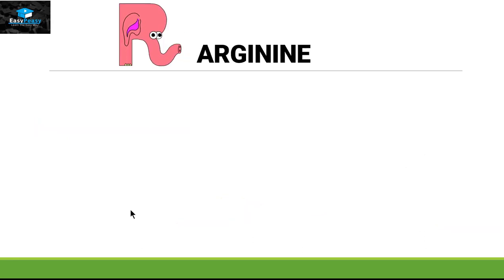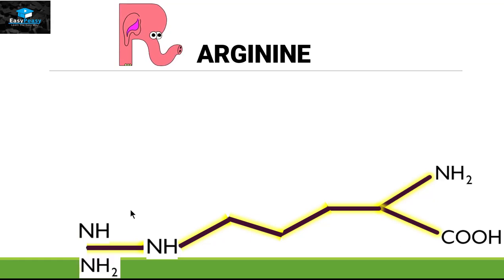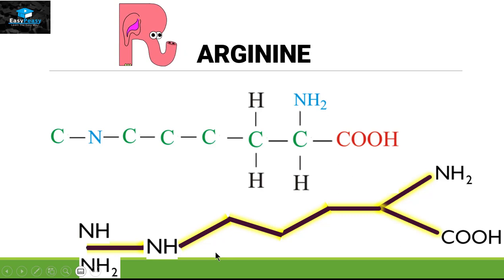Last but not least is arginine — symbol R. To memorize the structure, we use the fork, make a wave-like structure with three carbons, attach an NH group, then attach one more carbon with this guanidinium group and NH2. To make the official structure, we attach three carbons to the fork. The third carbon is attached to one nitrogen, and this nitrogen is attached to one carbon. This carbon is attached to two nitrogens.